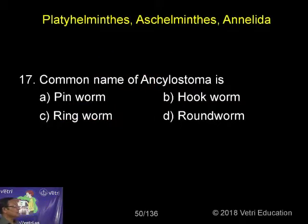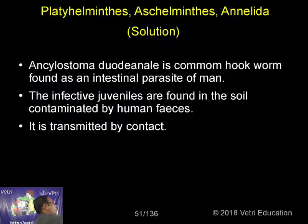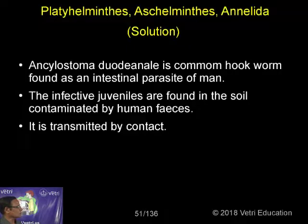The common name of Ancylostoma duodenale is nothing but the hookworm, an intestinal parasite — a roundworm living in the intestine. It is a common hookworm found as an intestinal parasite of man.